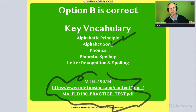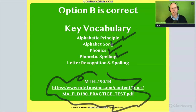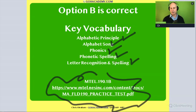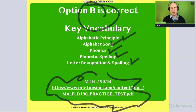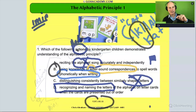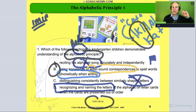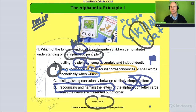We've got: alphabetical principle, alphabet song, phonics, phonetic spelling or inventive spelling — which we'll look at more — letter recognition, and letter recognition and naming. Lots of good stuff in these questions. The answer is B, and you'll remember that because you're thinking of an activity that uses the alphabetical principle. It helps students practice matching up letters with sounds and sounds with their predictable letters. The answer is B — it's a good one.